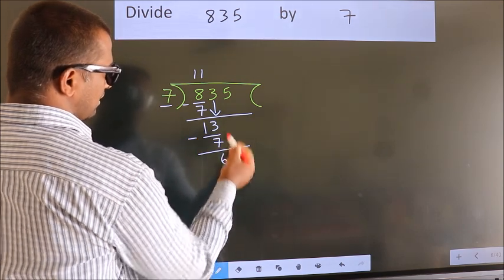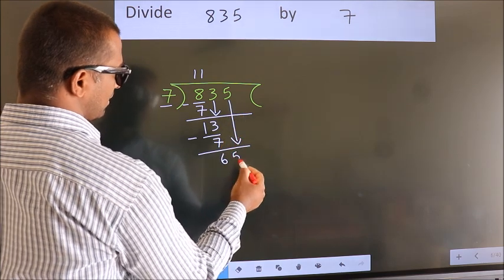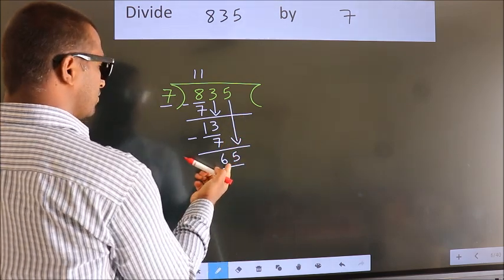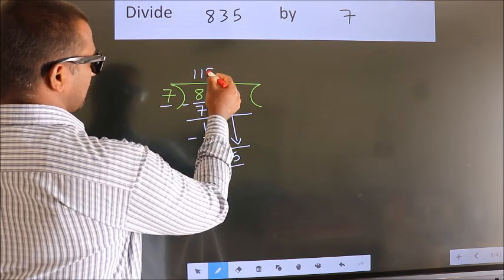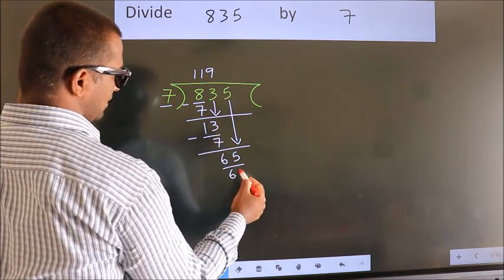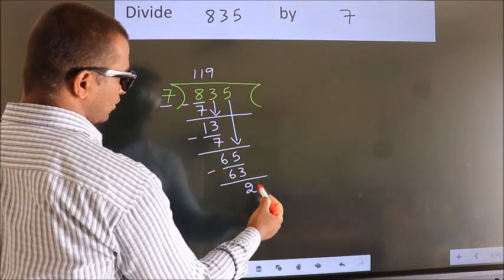After this, bring down the beside number. So, 5 down. So, 65. A number close to 65 in 7 table is 7 times 9 is 63. Now, we subtract. We get 2.